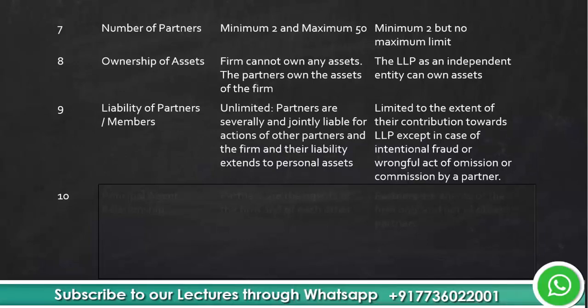Next is liability of the partners. The basic feature of partnership is unlimited liability — partners are severally and jointly liable for the actions of other partners and the firm, and their liability extends to personal assets. In case of an LLP, liability is limited only to the extent of their contribution towards the LLP. Of course there are exceptions, such as intentional fraud or a wrongful act or omission by a partner.